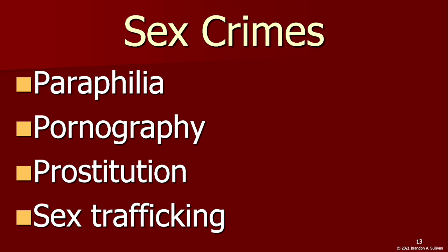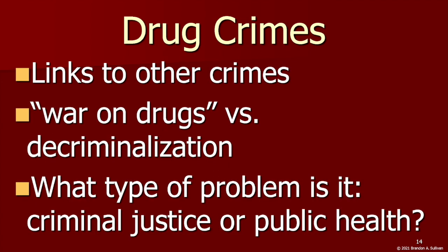Prostitution is closely related with concerns over human trafficking, particularly sex trafficking. The victims of which, all too often, are children and young women. Next, there are drug crimes. Many drugs are outlawed in the U.S., both due to the harm they cause to those who take them, but also due to their links with other types of crime.